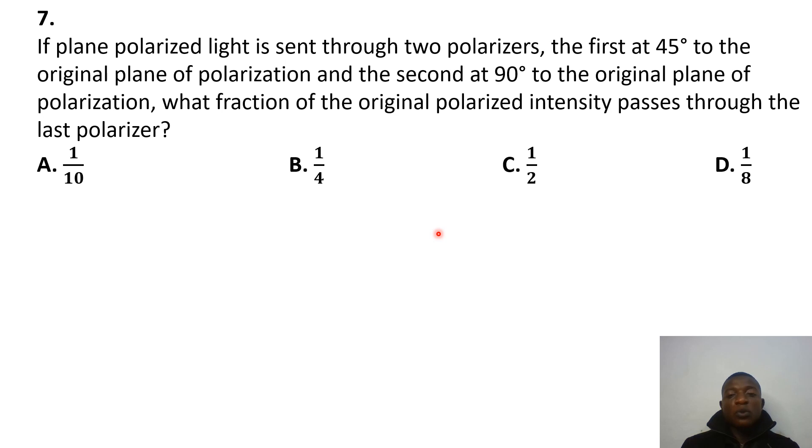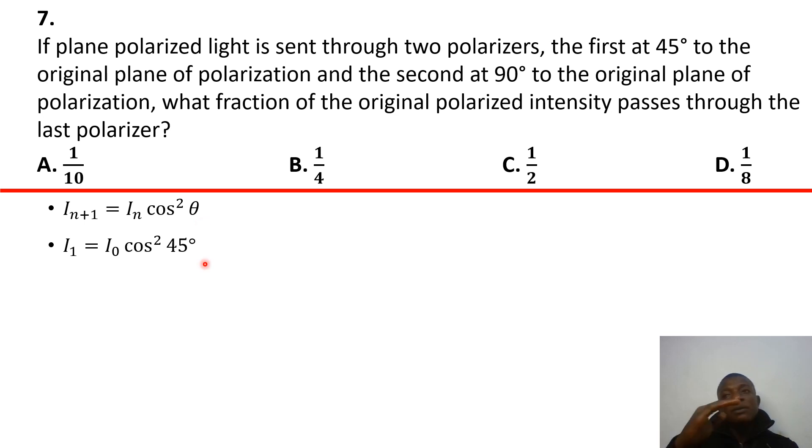Question 7: If plane polarized light is sent through two polarizers, the first at 45 degrees to the original plane of polarization, the second at 90 degrees to the original plane of polarization, what fraction of the original polarized intensity passes through the second polarizer? Okay. I just have to say that there's a problem with the question, but I'm just going to talk about the problem later. So we have i n plus 1 equals i n cos square theta. This is Malus's law. It basically tells you what proportion of intensity of light comes through after it's polarized. So i n is the original intensity before the light went through the polarizer. And then i n plus 1 is like the intensity you get after the light goes through the polarizer.